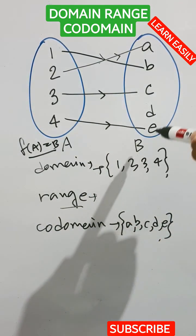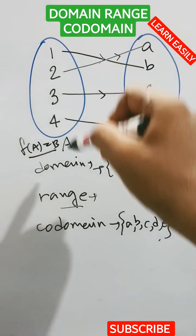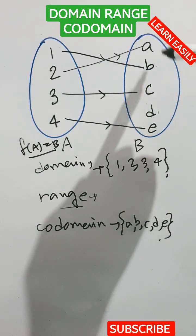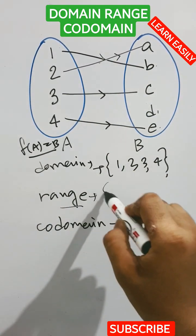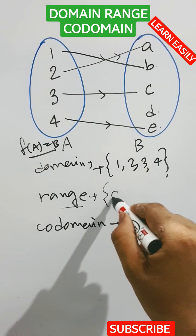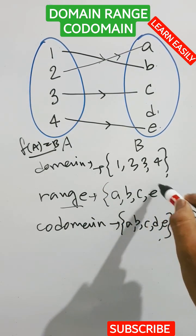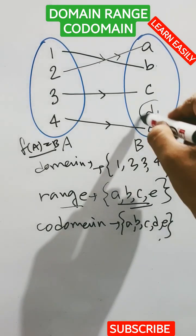Range means the elements present in the set B that is directly related to the set A. That is a, b, d, a, b, c, e are related to set A. So a, b, c, and e are range. D is not because it has no mapping from set A.